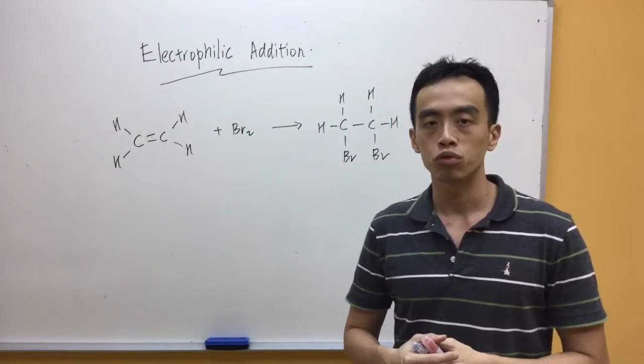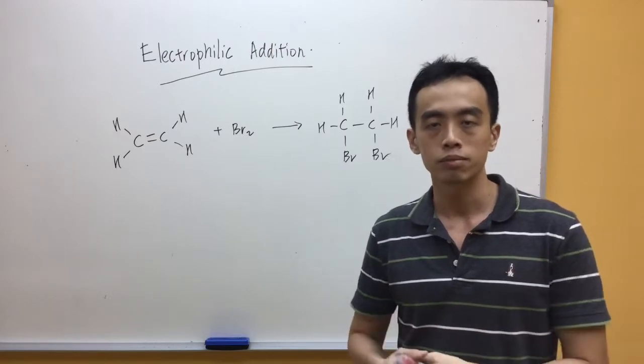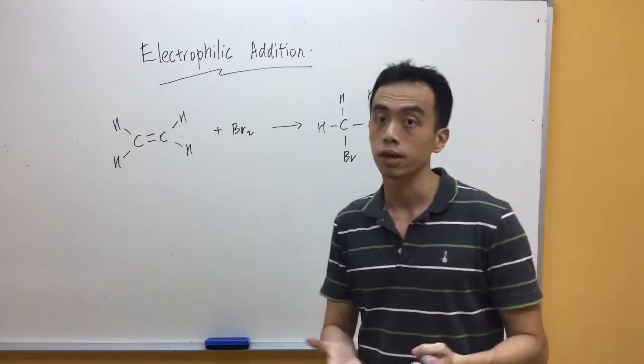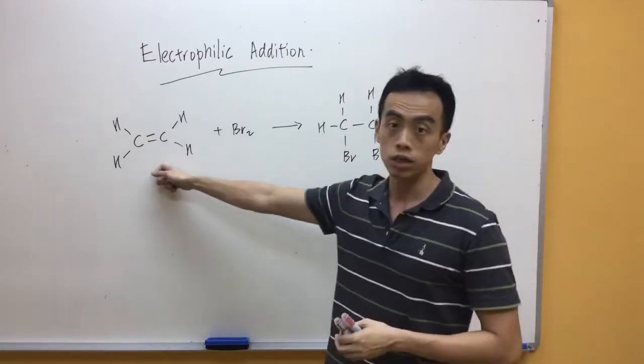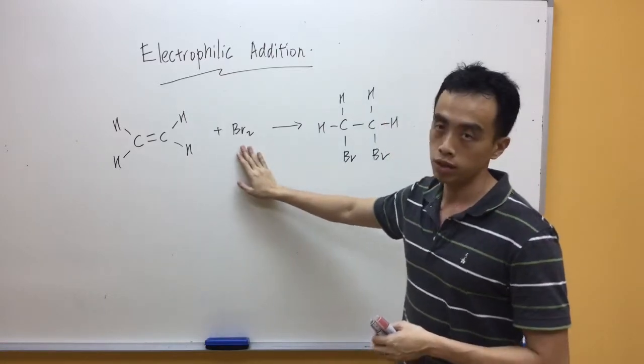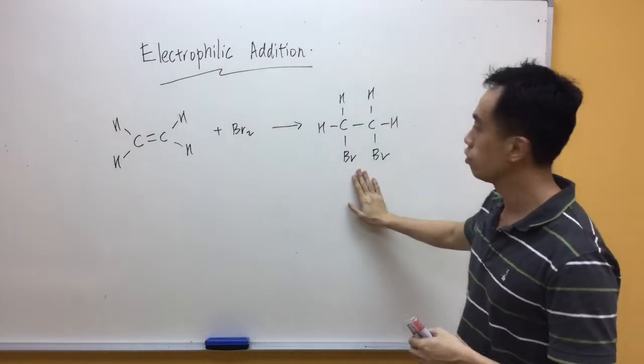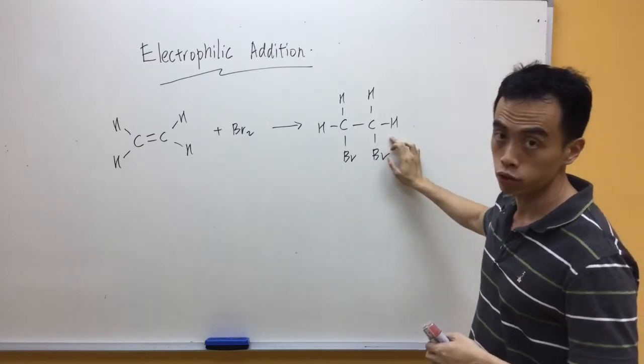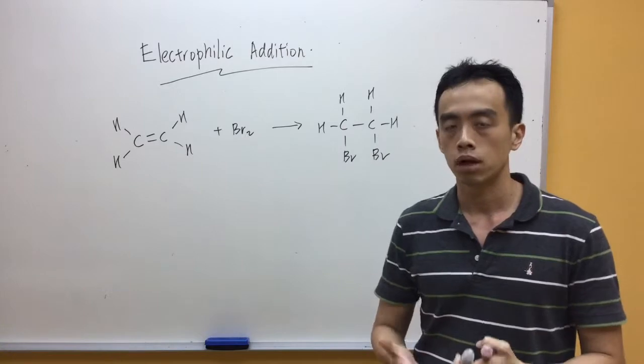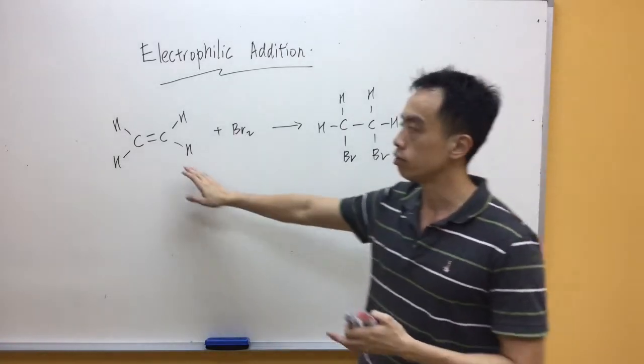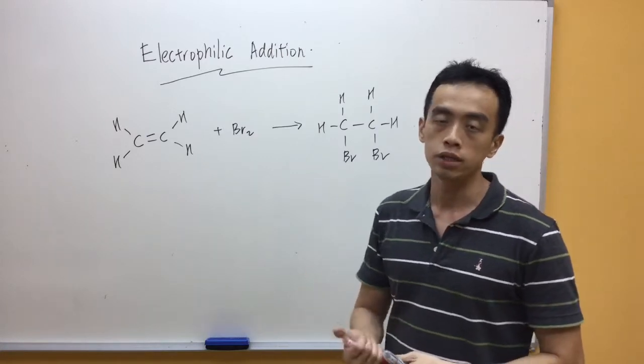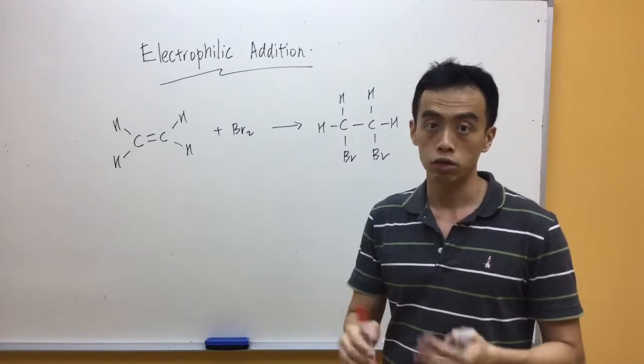Hi everyone, this video will go through describing the mechanism of electrophilic addition of alkynes. Now, let's look at a very simple example involving ethyne, C₂H₂ with bromine, undergoing addition reaction to form CH₂Br-CH₂Br. Before we draw the mechanism proper, let's look at our alkynes and try to understand why alkynes undergo electrophilic addition reaction.